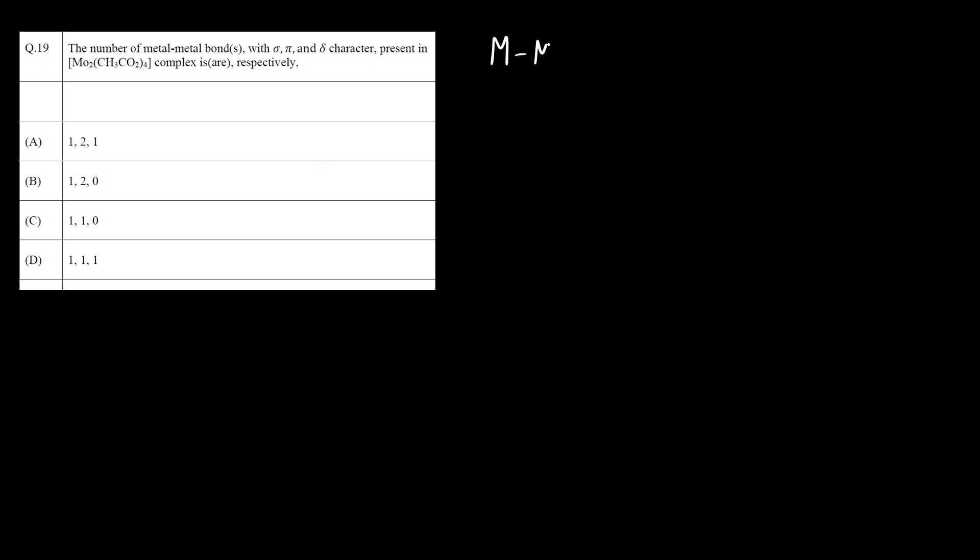How do you find out the metal-metal bonds? The formula is 18 into total number of metal atoms (n) minus total valence electrons, divided by 2. Here n equals 2, as there are two molybdenum atoms. Now we have to find out the total valence electron.